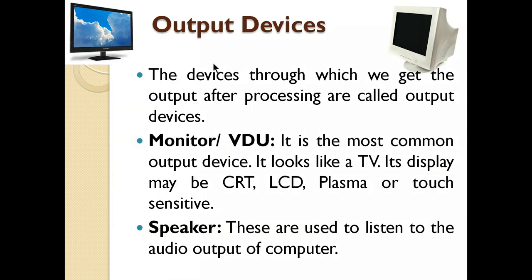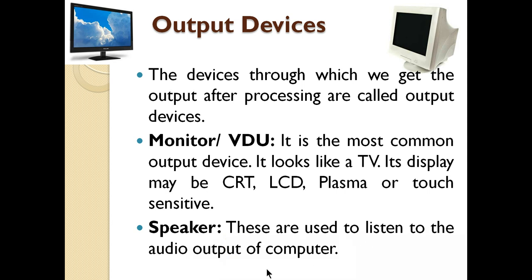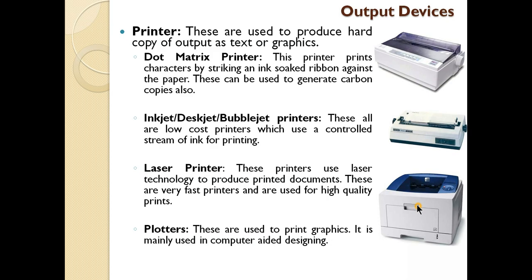Now, output devices. We have just read about input devices through which we give input to the computer. After inputting, processing is done by the CPU, and after processing, the result is given to the user with the help of output devices. Those devices through which we get the output are called output devices. For example, the monitor or video screen — these are the most common output devices. Whatever we are working on, we can see it on the monitor. Then next output device is the speaker — these are used to listen to audio. When a song is played, the voice comes from speakers as output.